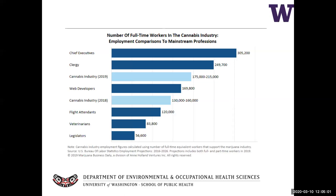Cannabis-related companies now employ over 100,000 full or part-time workers and the industry is growing rapidly. As of October 2019, here in Washington State, over 1,100 producer licenses have been issued, producing together 200,000 pounds of marijuana flower per year and a total of 1.3 billion in total sales in the 2017 fiscal year. In 2018, tax revenue from cannabis sales in Washington State surpassed that from tobacco and alcohol. This is a large and growing industry.